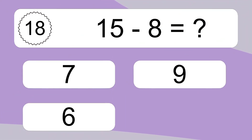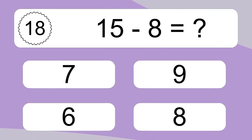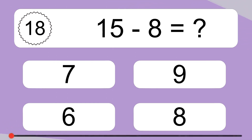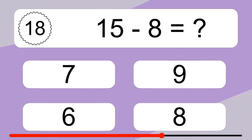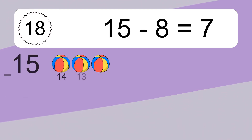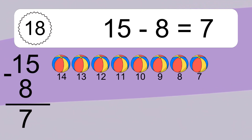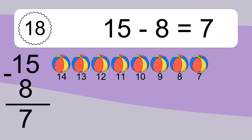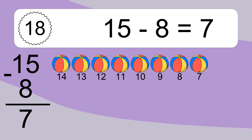15 minus 8 equals what? 15 minus 8 equals 7. Let's count it: 14, 13, 12, 11, 10, 9, 8, 7.